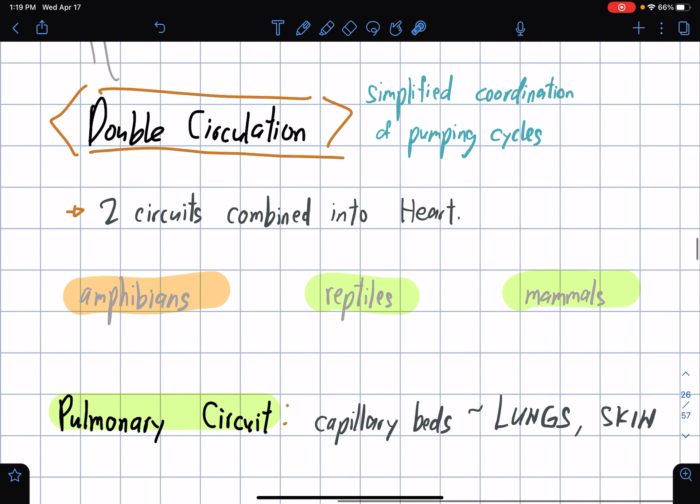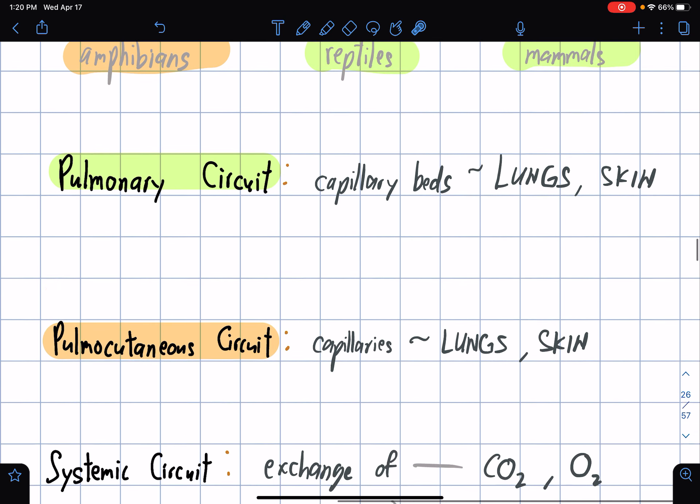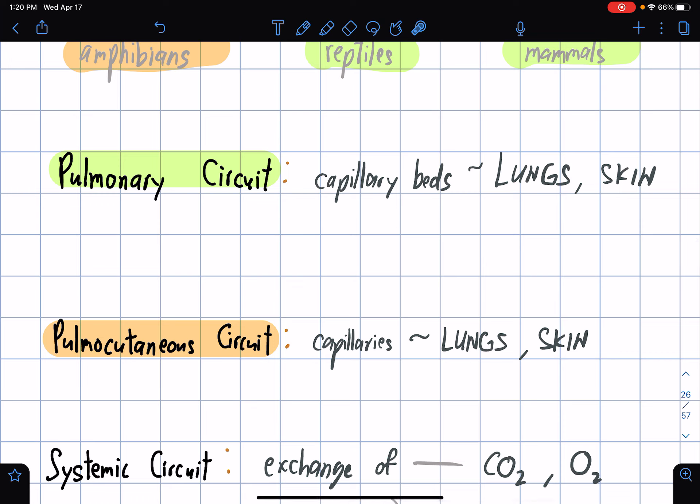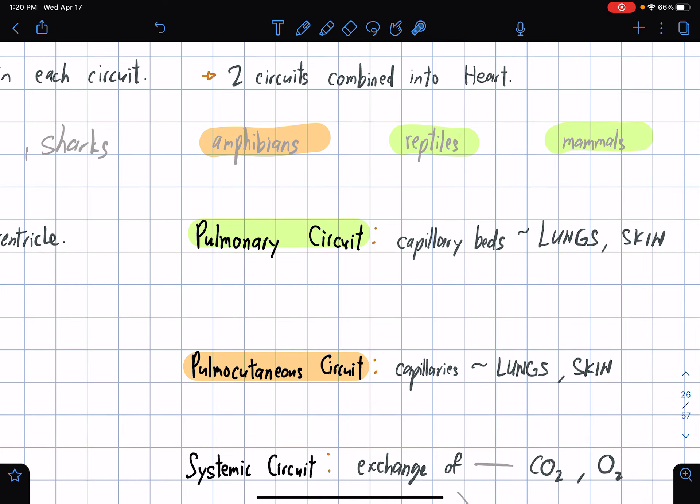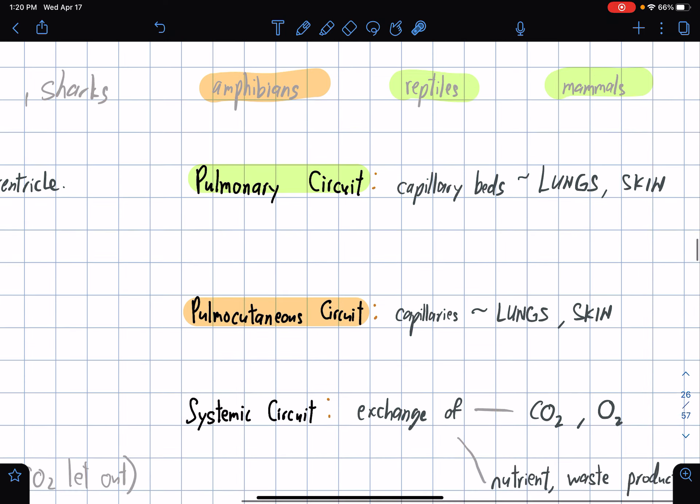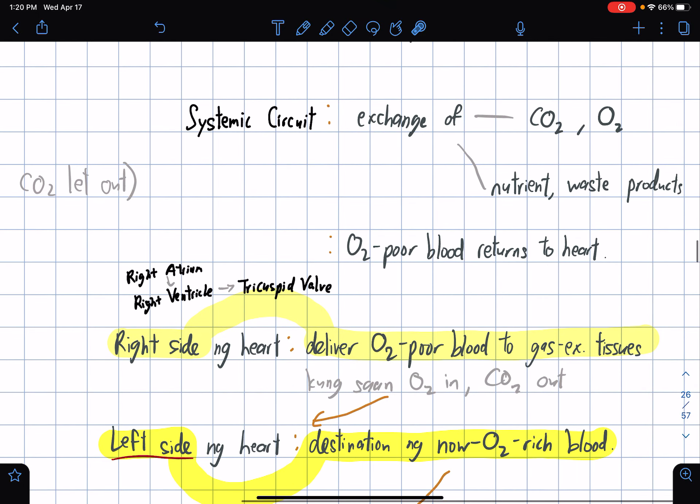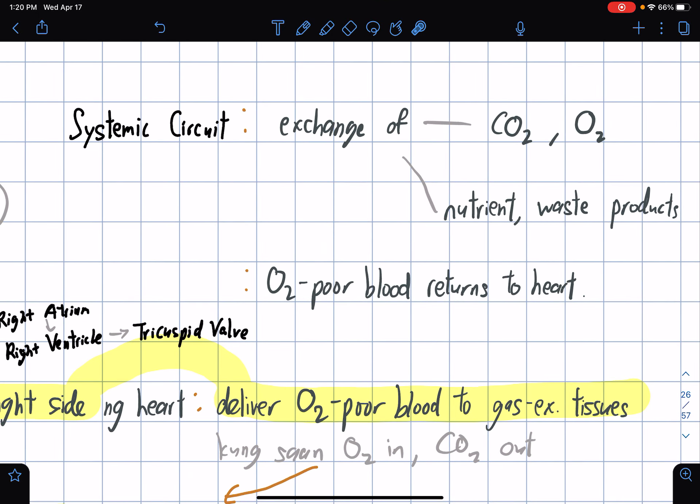For double circulation, literally from the word, circulation happens twice. Two circuits are combined into the heart. Amphibians, reptiles, and mammals have this kind of circulation. We have pulmonary circuit - capillary beds lungs, and pulmocutaneous circuit - capillaries lungs and skin. Pulmonary circuit is exclusive for reptiles and mammals, pulmocutaneous circuit is exclusive for amphibians.